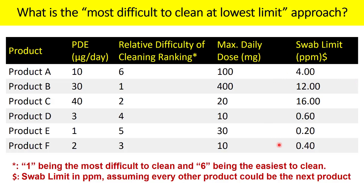Looking at the swab limits, product E has the lowest swab limit at 0.20 PPM. For cleaning difficulty, we need the product ranked number 1 — the most difficult to clean — which is product B. The swab limit for product B is 12 PPM.